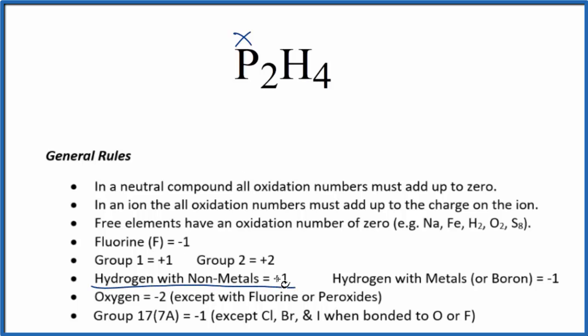Hydrogen, when it's bonded to a nonmetal like phosphorus, is going to be +1. So each hydrogen here is +1. We know everything's going to add up to zero since it's neutral.